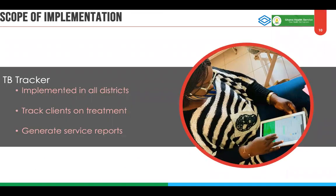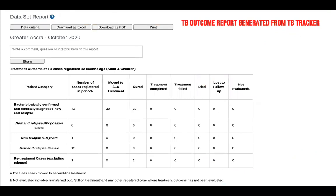Our scope of implementation covers all 260 districts of Ghana. Currently all TB clients are being captured through the Tracker system, and we have also been able to generate the routine reports — the TB case registration report, the TB treatment outcome report, and the multi-drug resistant TB report. That process has been automated, with facilities capturing the data quite effectively. Here is a screenshot of one of the automated reports picked from the system, showing TB outcomes.